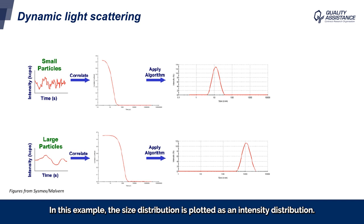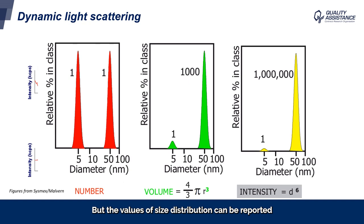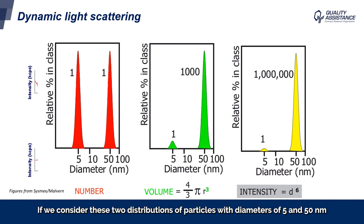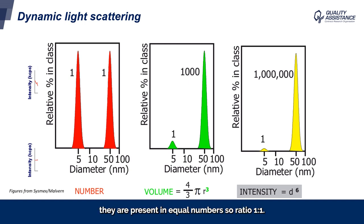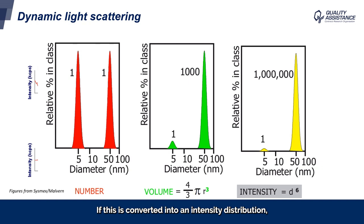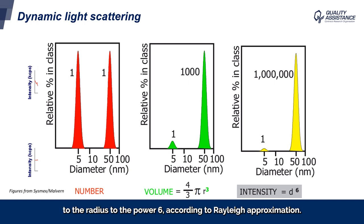In this example, the size distribution is plotted as an intensity distribution. But the values of size distribution can be reported by number, intensity, or volume, as we can see on these plots. If we consider two distributions of particles with diameters of 5 and 50 nanometers present in equal numbers — ratio 1 to 1 — if this is converted into volume, the ratio of the peaks would change to 1 to 1000, related to the calculation of the volume of a sphere. If converted into an intensity distribution, the ratio is now 1 to 1 million, because intensity is proportional to the radius to the power 6, according to the Rayleigh approximation.